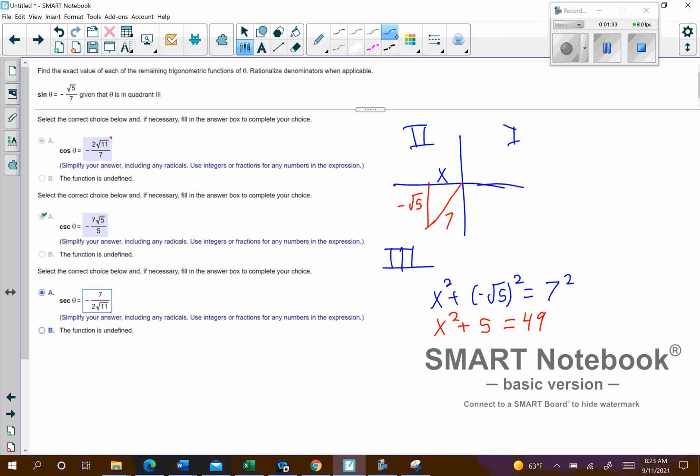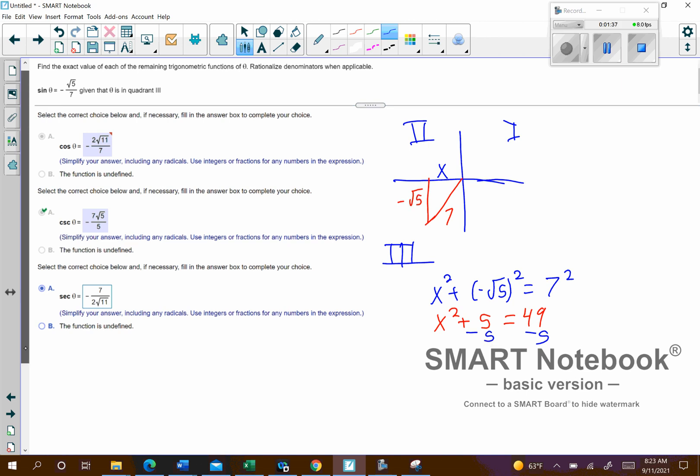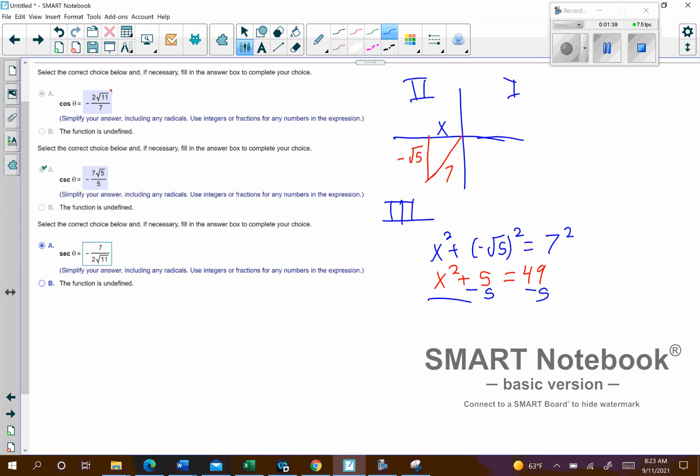And then what we'll do next is we'll go ahead and subtract 5 from both sides. And so we'll get x squared equals 44. And then we're going to square root that, and we can simplify that. And then also we need to figure out is it positive or negative, and it actually is going to be negative.